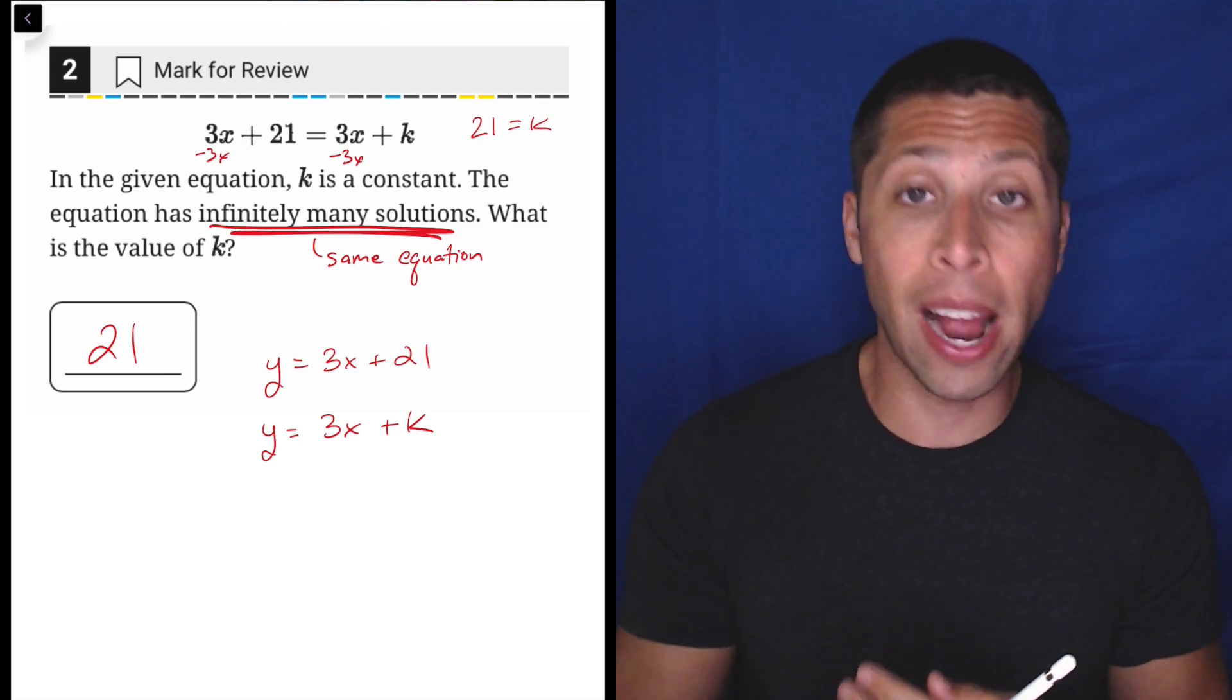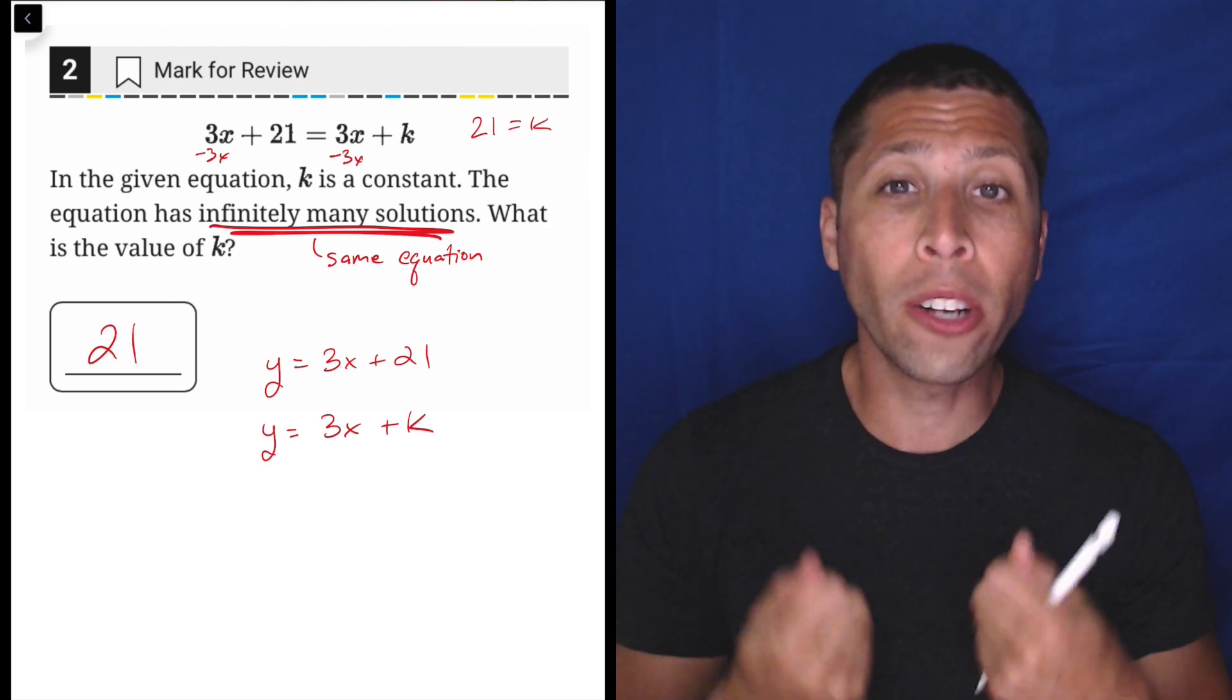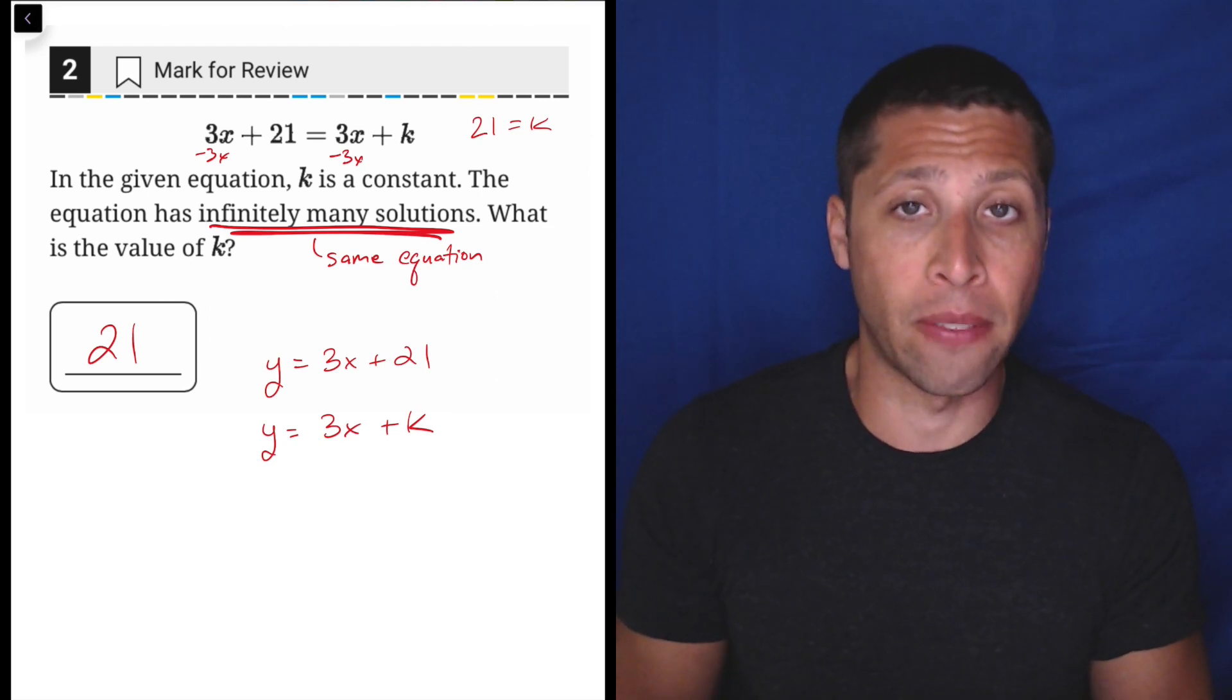These are two lines on a graph. They both have Y equals MX plus B equations. What should those two equations look like to produce the situation that they've asked for?